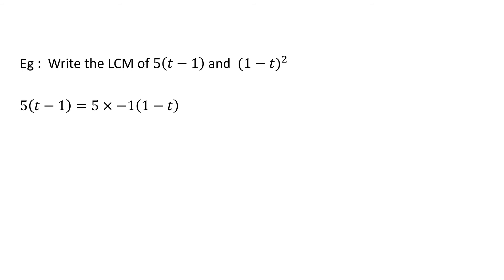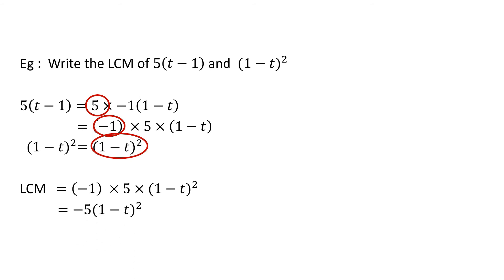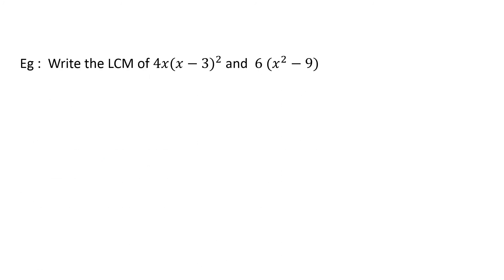When you need to interchange terms in an algebraic expression, all you have to do is take a minus 1 out of a bracket. So we write the factors of 5(t minus 1) as minus 1 into 5 into (1 minus t). The second expression cannot be further factorized; it stays as (1 minus t) squared. Taking the highest powers of each factor: highest power of 5 is 5, highest power of minus 1 is minus 1, and the highest power of (1 minus t) is (1 minus t) squared. So the LCM is minus 5 times (1 minus t) whole thing squared.